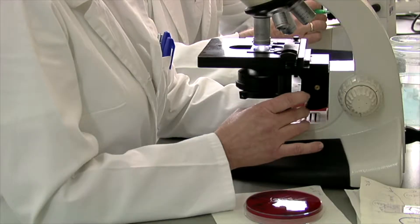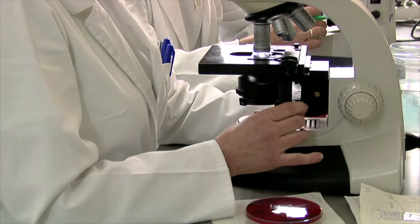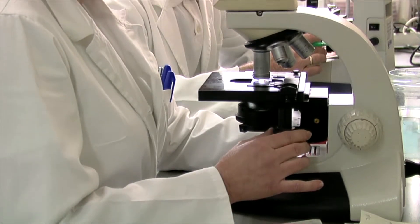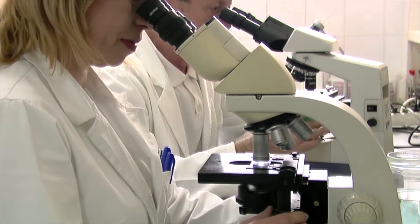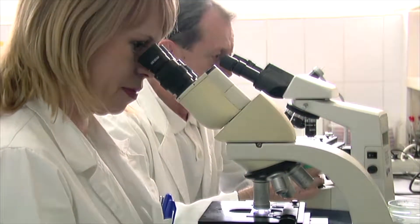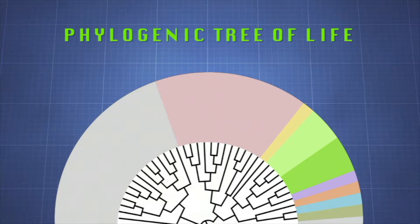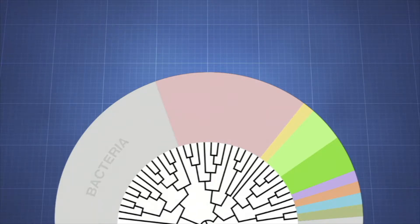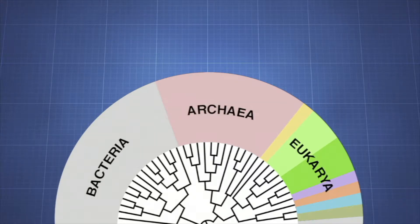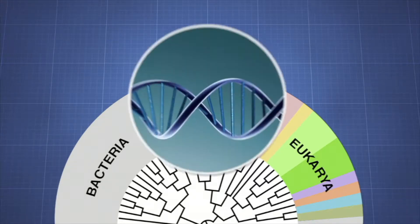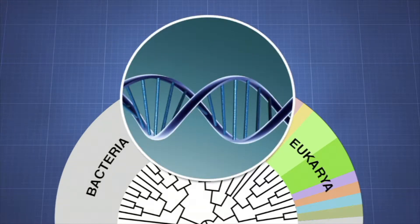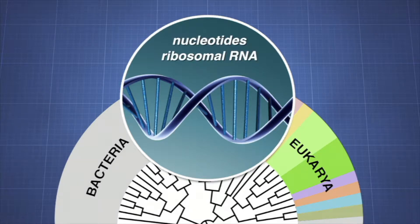From these scientific advances, scientists devised the three-domain system of classification. The phylogenetic tree of life is an evolutionary model that classifies life into three domains: bacteria, archaea, and eukarya. The domains are based on the differences in the sequence of nucleotides in a cell's ribosomal RNA.